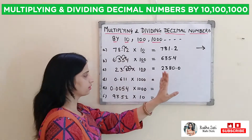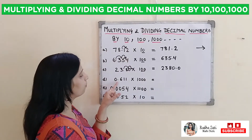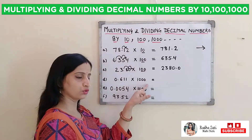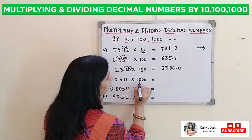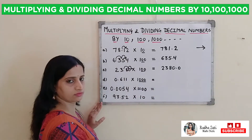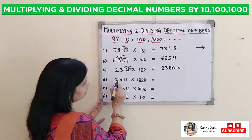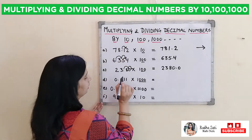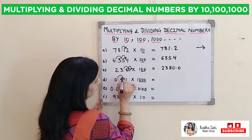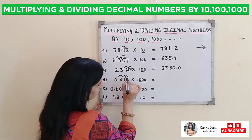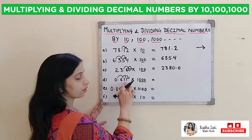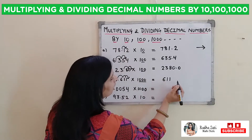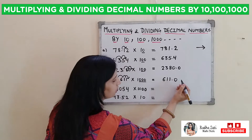Next is 0.611 multiplied by 1000. In 1000 there are 3 zeros. This means our decimal will shift to the right hand side by 3 places — 1, 2, and 3. Our decimal will come after 1 now, so our answer will be 611.0.